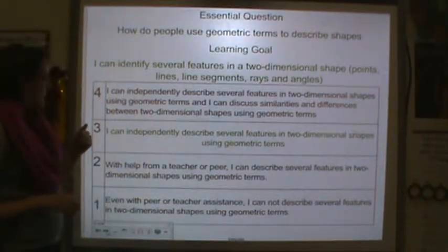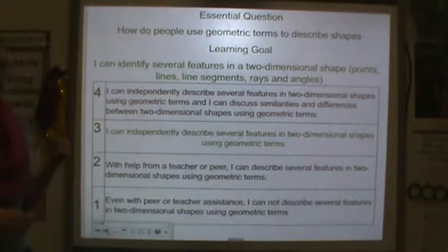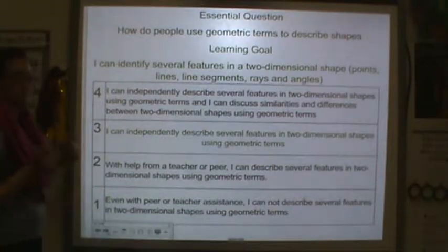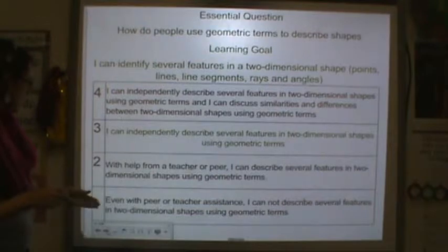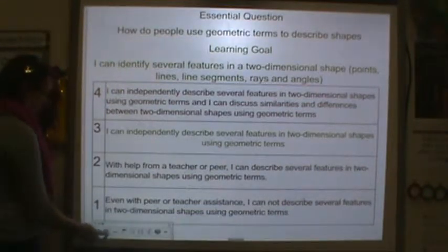You can talk about independently several features of two-dimensional shapes using geometric terms if you're a level three. Level two means you need help with a teacher or peer, and level one means you're really having problems and need some help with it.